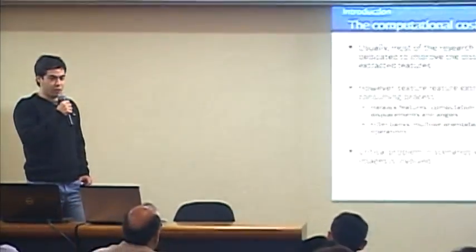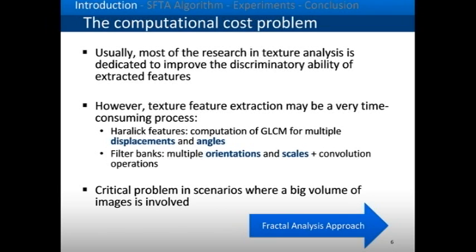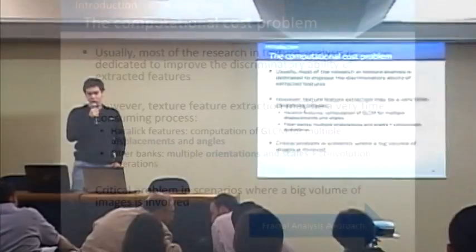There is a problem: most research in texture analysis aims at improving the quality of extracted features. However, when dealing with a high number of images, we also need to consider computational cost. For Haralik features, we need to compute multiple displacements and angles; for Gabor filter banks, we must generate and convolve multiple filter kernels. In scenarios with large volumes of images, this can be a critical problem.